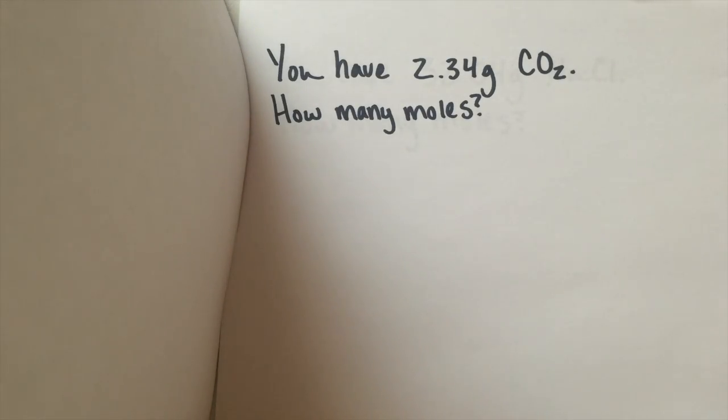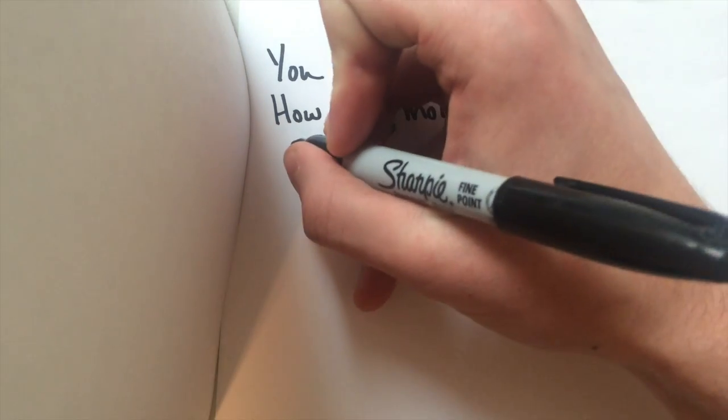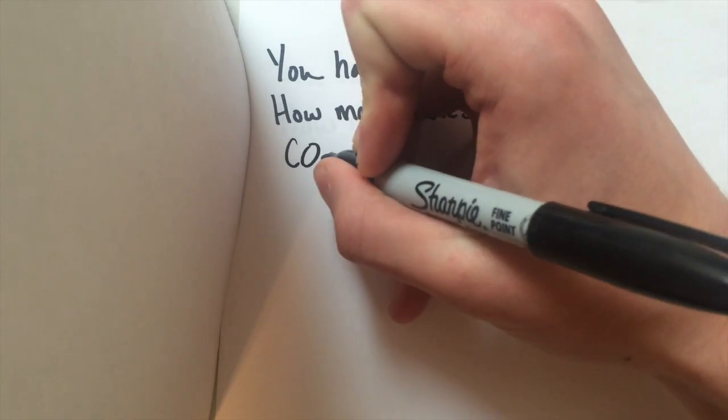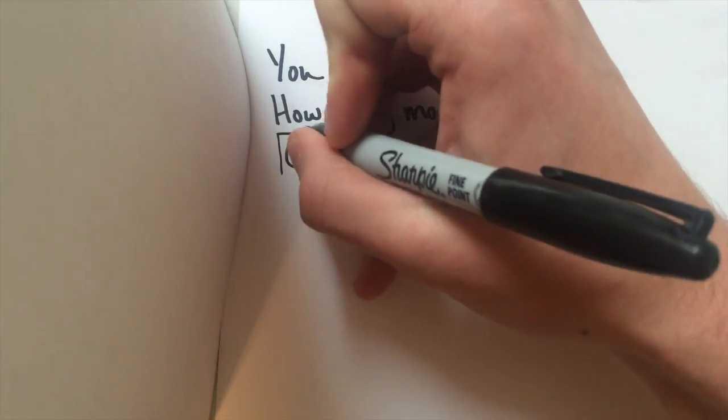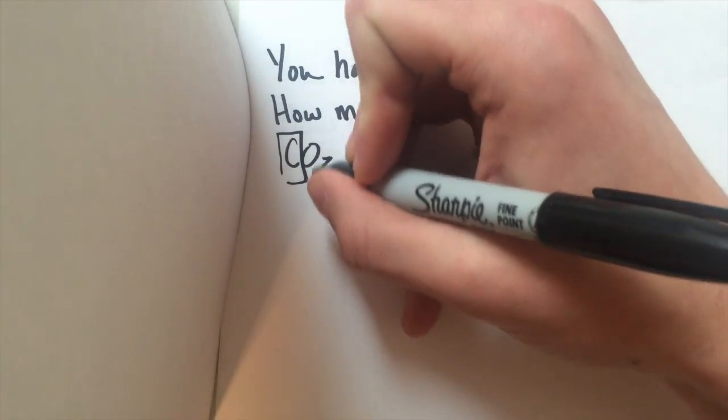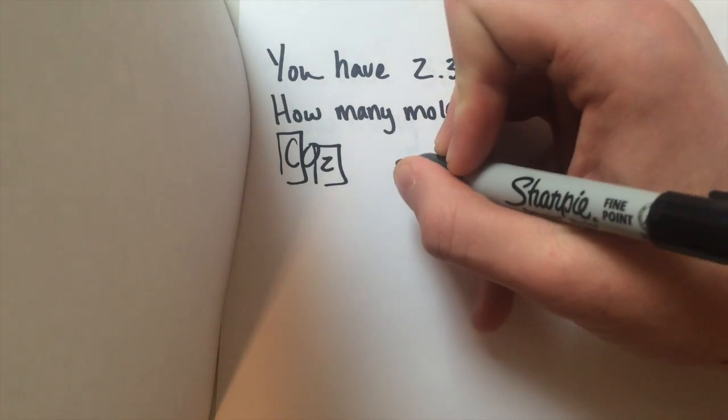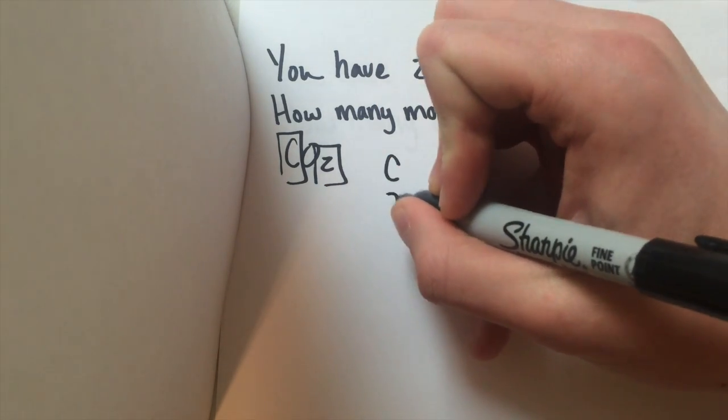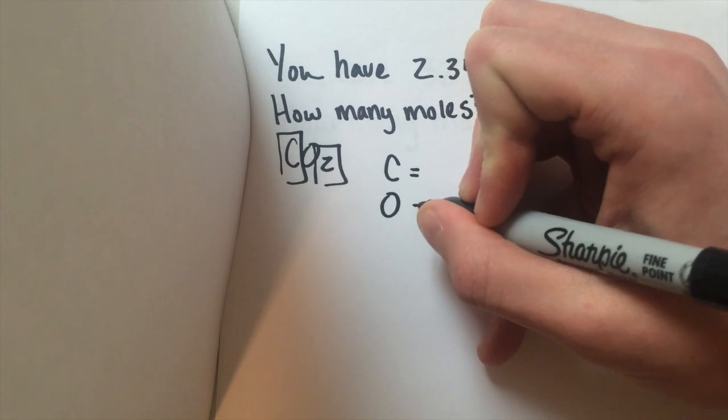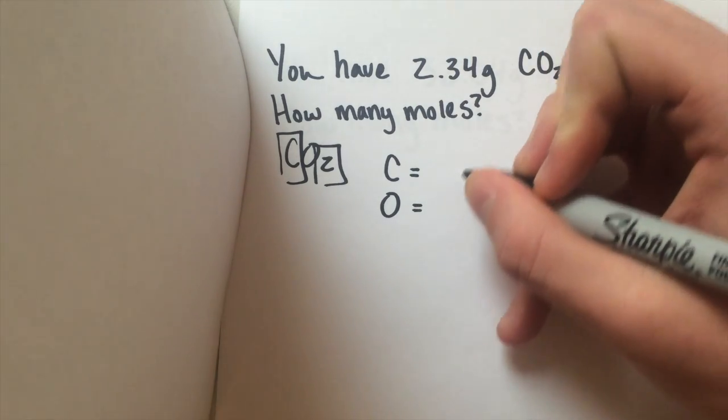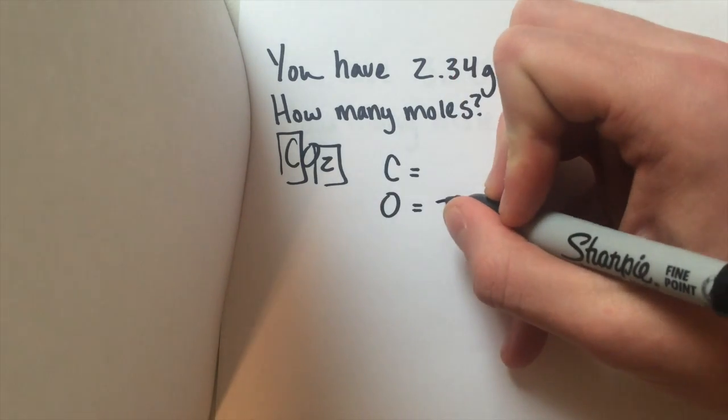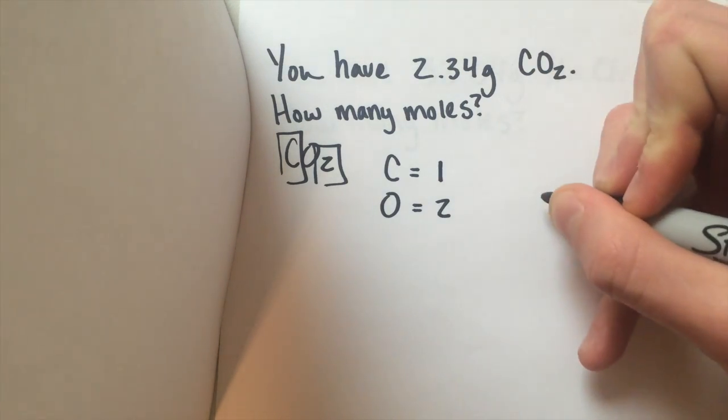So let's say you have CO2. First, let's break down the compound into individual elements and find out how many of each element we have. So for CO2, it looks like we have one carbon and two oxygen. So I'm going to label my carbon and my oxygen. It looks like we have two oxygen, one carbon.